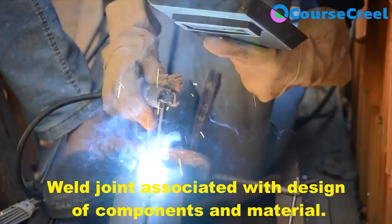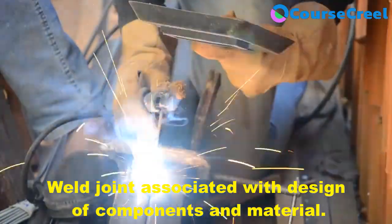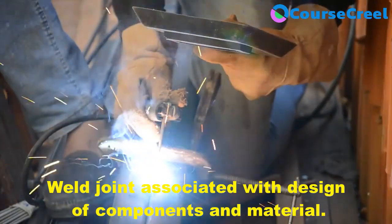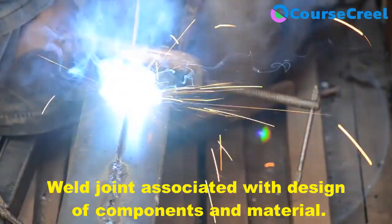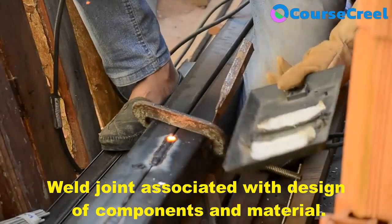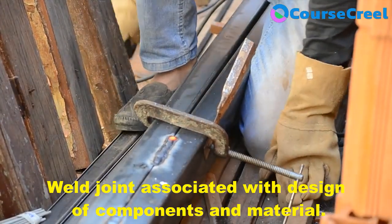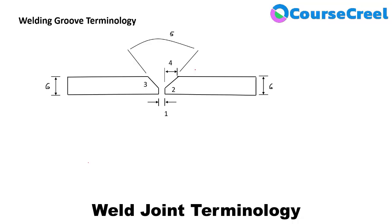The weld joint design is mainly associated with the design of the component, its assembly, and apart from that, it has a small influence on the material. Neither the geometry of the weld nor its method of edge preparation has any influence on the joint itself. When welding two components, we need to see the design of the component, because at the end we are joining two different parts to form an assembly or a combined part.